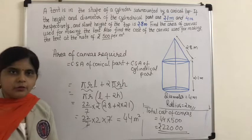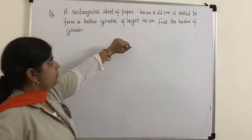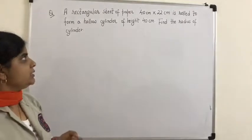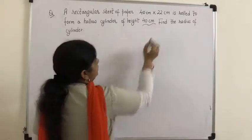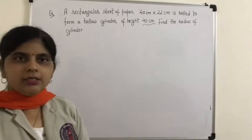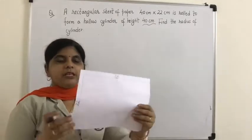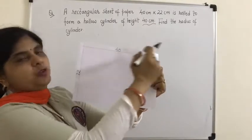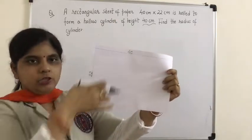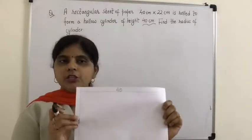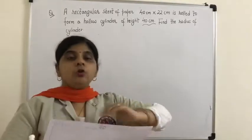Now let us do one more question. A rectangular sheet of paper 40 cm × 22 cm is rolled to form a hollow cylinder of height 40 cm. Find the radius of the cylinder. So the sheet has length 40 cm and breadth 22 cm, and it is rolled into a cylinder.